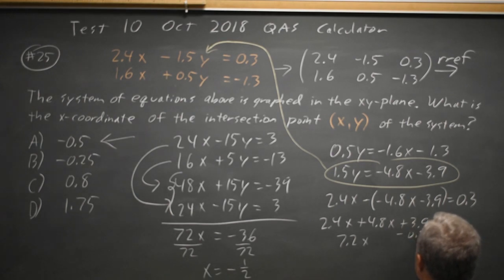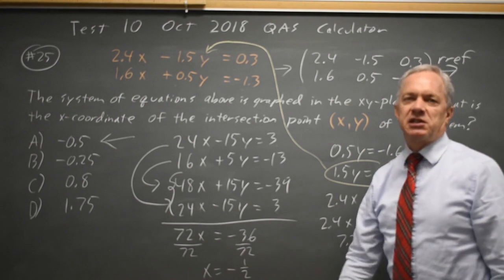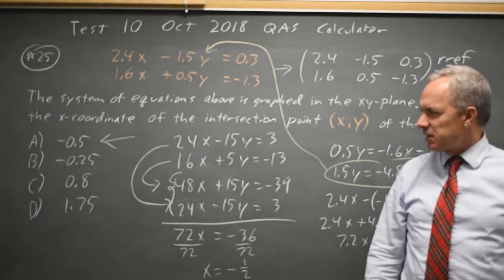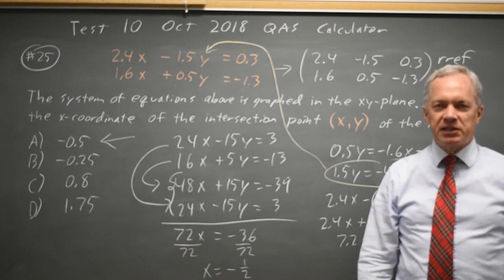2.4x minus negative plus 4.8x minus negative plus 3.9 equals 0.3. So that is 7.2x. If I subtract 0.3 from both sides, I get plus 3.6 equals 0. Subtract 3.6 and divide by 7.2. And it's the same computation I did here. In any case, I get choice A and negative 0.5, which is the correct answer.